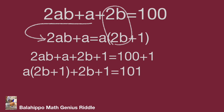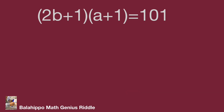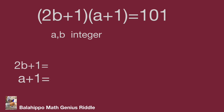Then we rewrite the equation as the quantity (2b plus 1) multiplied by the quantity (a plus 1) equal to 101. Because a and b are integers, the quantities (2b plus 1) and (a plus 1) are two integer factors of 101. So we come up with 4 cases.